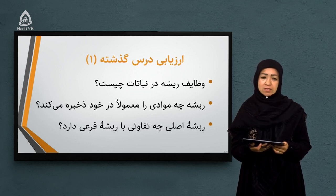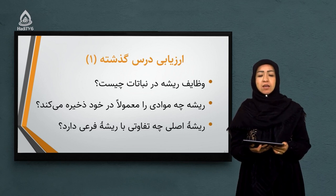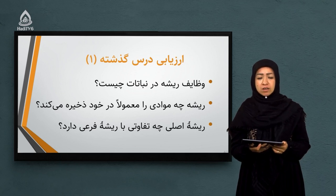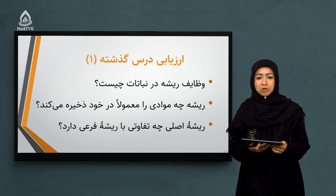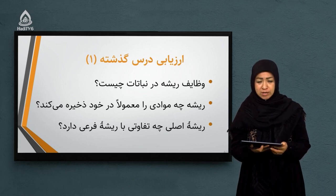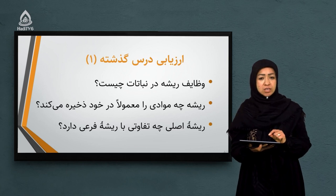سوال سوم: ریشه اصلی چه تفاوتی با ریشه فرعی دارد؟ پس از اینکه دانه یک نبات را داخل خاک قرار میدهیم، در ابتدا یک بخش میله‌مانند سفید رویش میکند که آن ریشه اصلی است. پس از ریشه اصلی، زائده‌های مویک‌مانندی از ریشه رشد میکنند به نام ریشه فرعی. ریشه اصلی بزرگتر است و ریشه فرعی که بعداً اضافه میشود، کوچکتر و مویک‌مانند است.